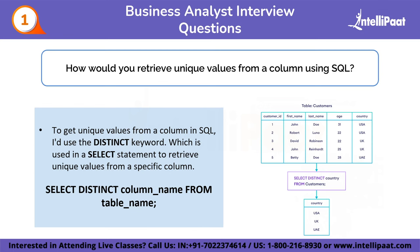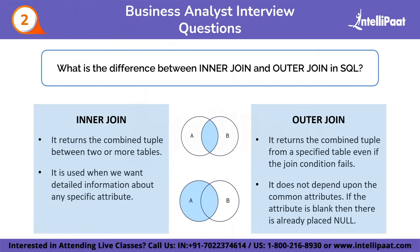The next question is: what is the difference between INNER JOIN and OUTER JOIN in SQL? An INNER JOIN retrieves matching rows from both tables based on a specific condition — it only includes rows that have matching values in both tables. An OUTER JOIN retrieves matching and unmatched rows; it includes all rows from one table and matching rows from the other, displaying NULL values where there is no match.